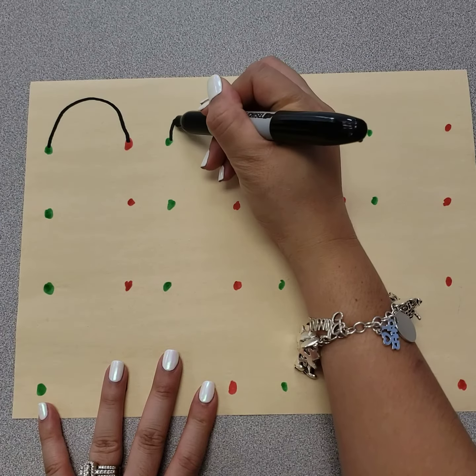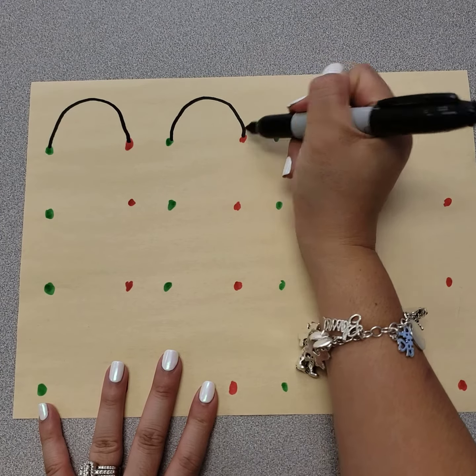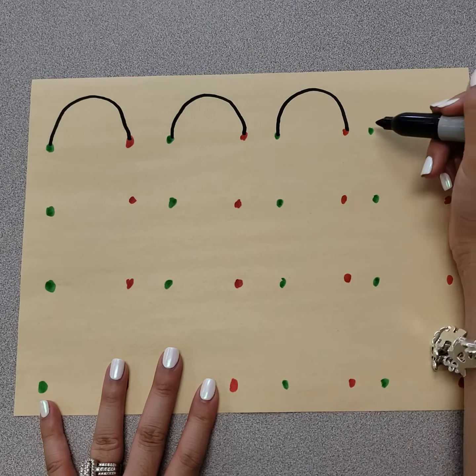We can do the first row. Green, curve over to the red. Green, up and over, red.